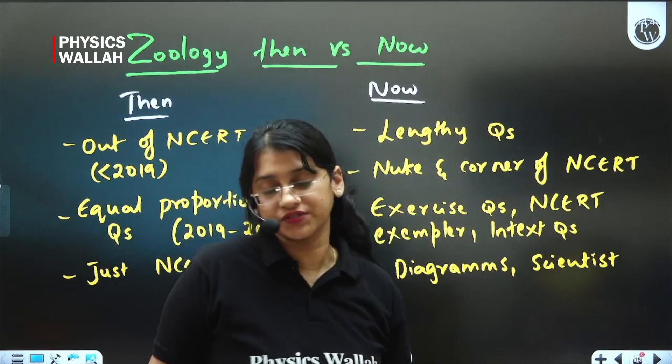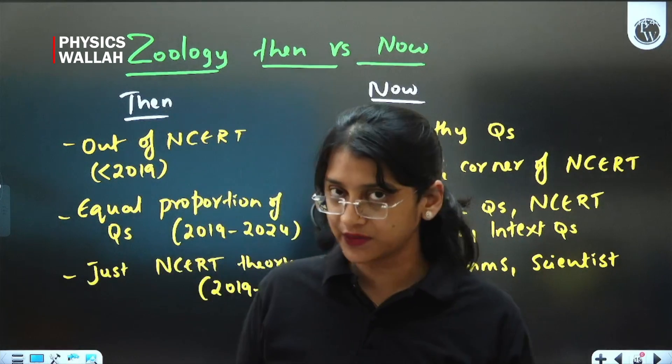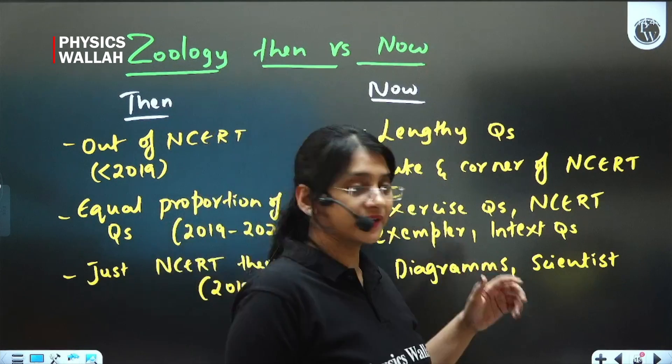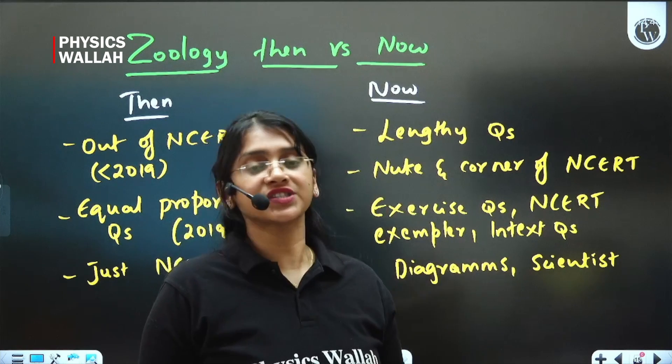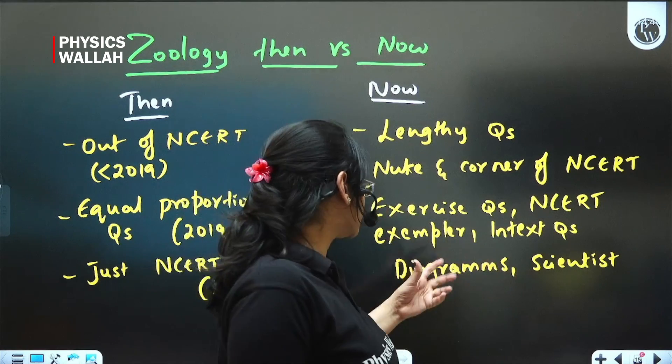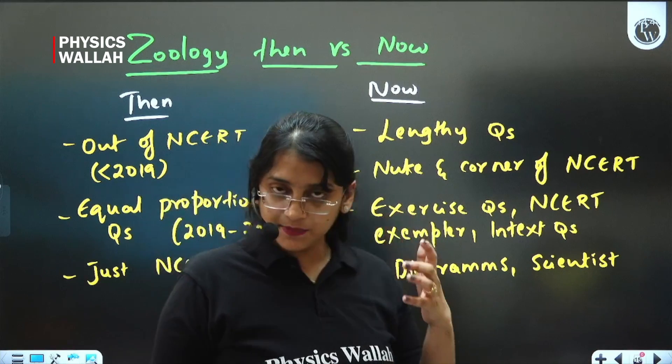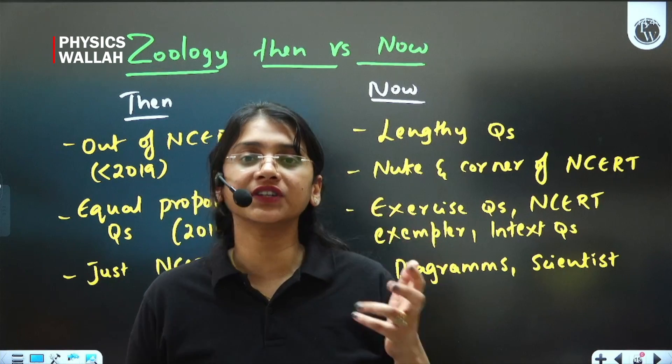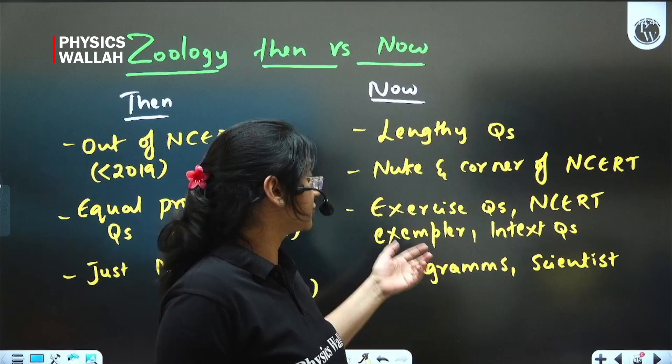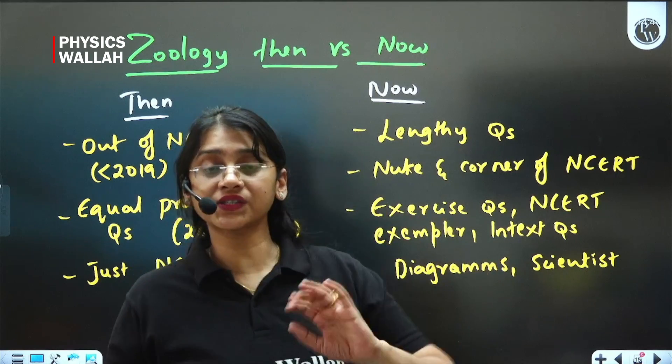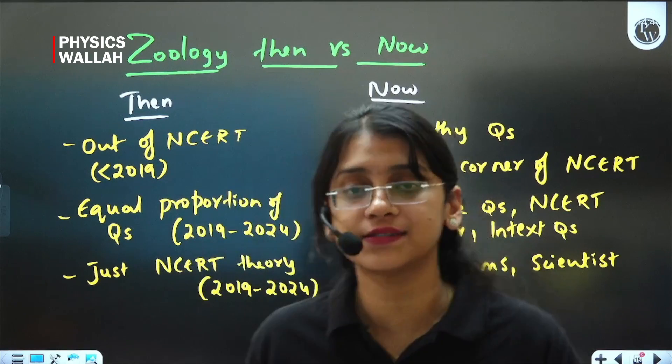Exercise or NCERT exemplar questions, you have to find the answers. Also in-text questions. Just now I have said about insulin, which was an in-text question. Answers were not there directly, but question was given, so you have to find answers for that. Also, questions can be expected from diagrams and scientist names. Scientist name is the one which is present in the beginning of the unit - those scientist names, their contribution, you should know. You should be studying from nook and corners of NCERT.